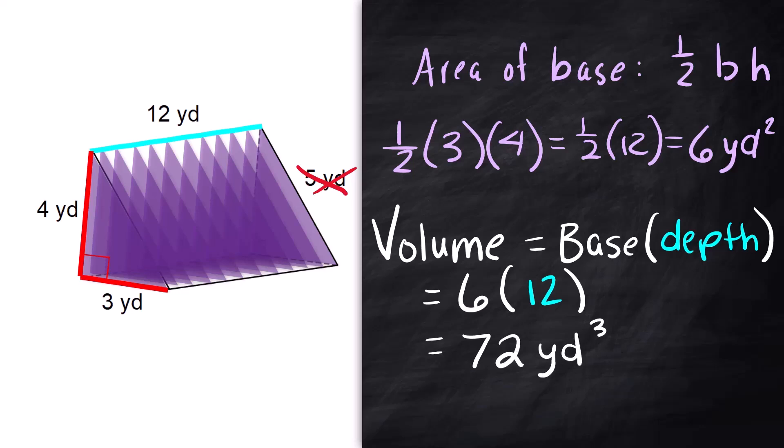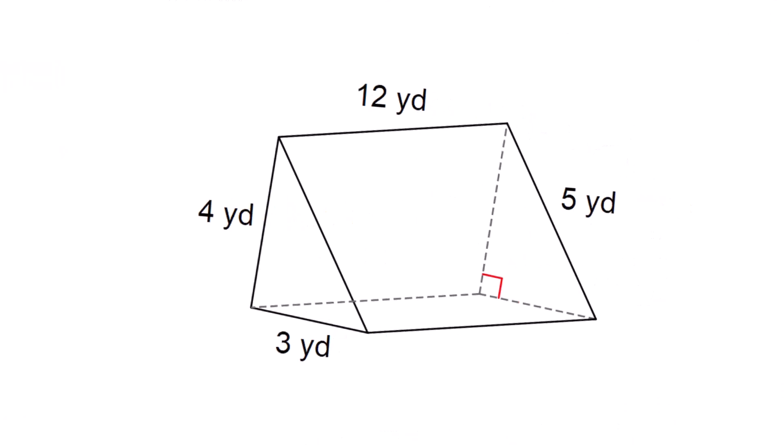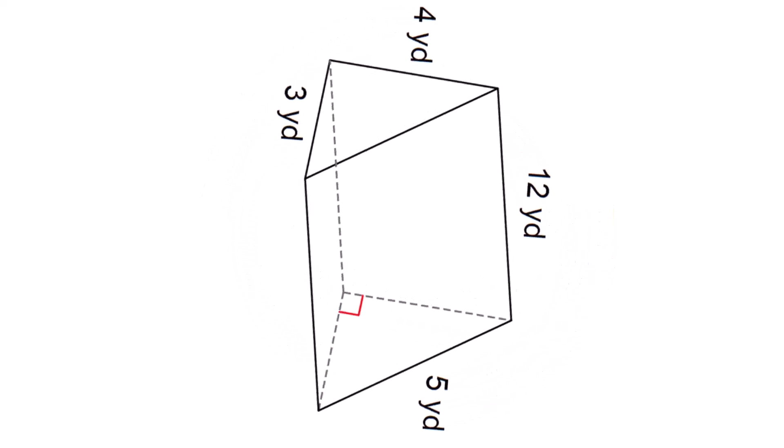Now this whole idea of height versus depth just has to do with how you're looking at the picture and what it makes sense to you. If it was rotated that 12 all of a sudden I wouldn't you could call it depth but all of a sudden the word seems to be height right? You're still using the same measurement. You're still using it the same way.